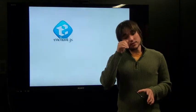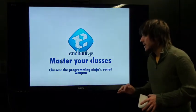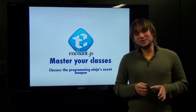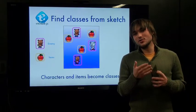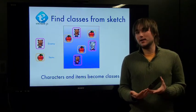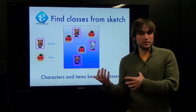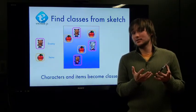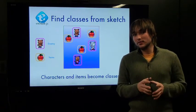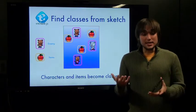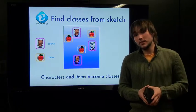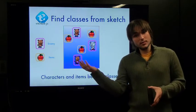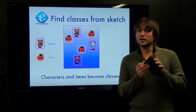Alright, so the second part of this video is classes. You have to master your classes in Enchant.js — it is the secret weapon of the programming ninja. Basically, in the sketch that you have created for your game, you're going to have several different characters and maybe some items or weapons on the screen. Each sort of class or group of objects on the screen — let's say enemies, or in this case bears and apples — is going to be a class. So you have class Bear and class Apple in this case. Characters and items become classes.